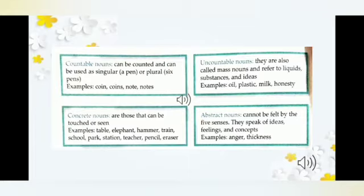Now here are the easiest kinds of nouns to understand: countable and uncountable nouns, which are understood by their names. Countable nouns can be counted and used as singular or plural. For example: coin/coins, note/notes, pencils, houses, girls in class, teachers in class — these are all things we can count, so they are countable nouns.